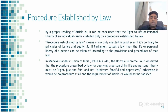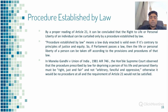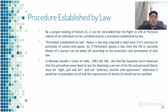Regarding the procedure established by law under Article 21: the right to life or personal liberty of an individual can be curtailed only by procedure established by law, meaning a law duly enacted is valid even if it is contrary to the principle of justice and equity. If parliament passes a law, then the life or personal liberty of a person can be taken away according to the provisions and procedures of that law — capital punishment is a classic example. The Honourable Supreme Court observed that the procedure prescribed by law for depriving a person of his life and personal liberty must be right, just and fair, and not arbitrary, fanciful or oppressive.